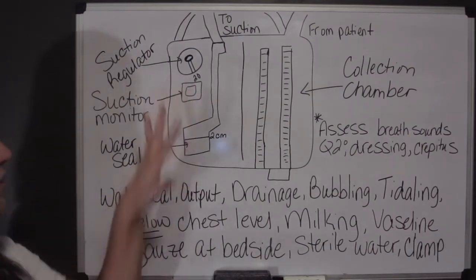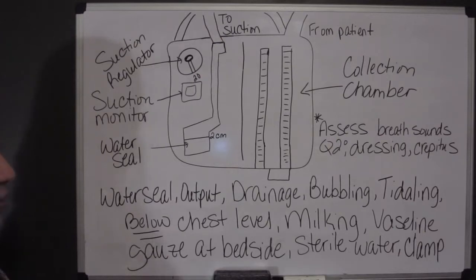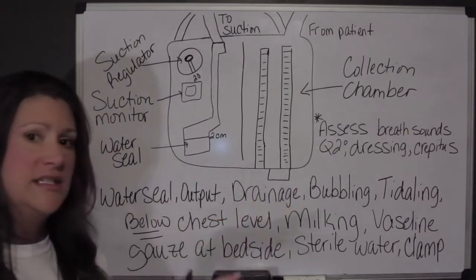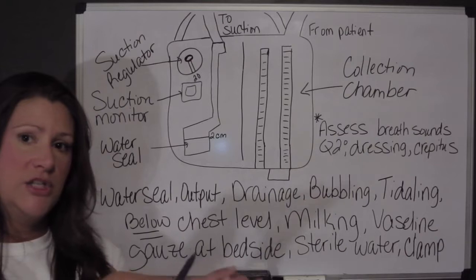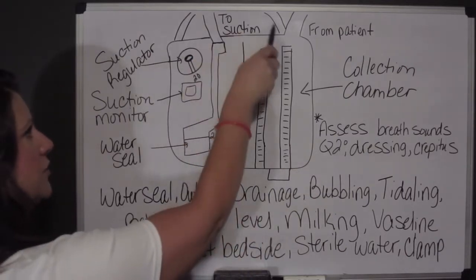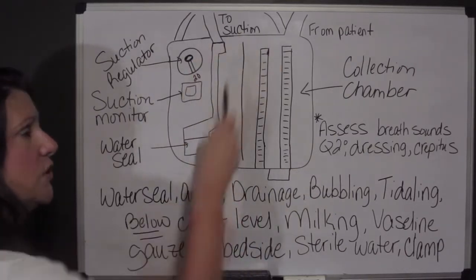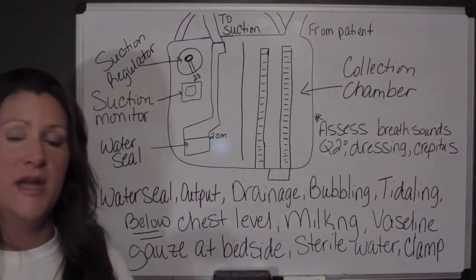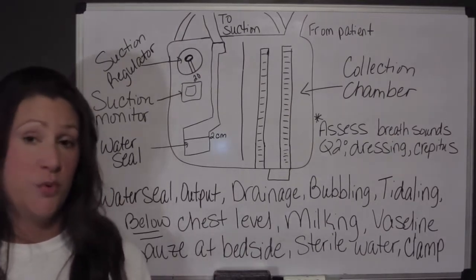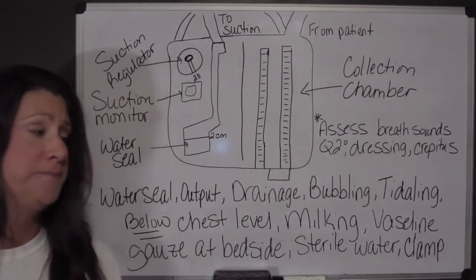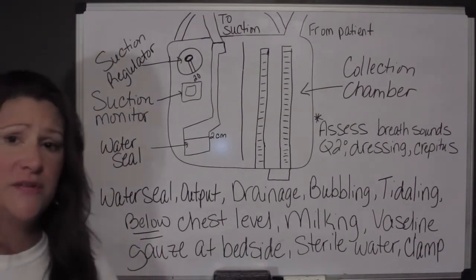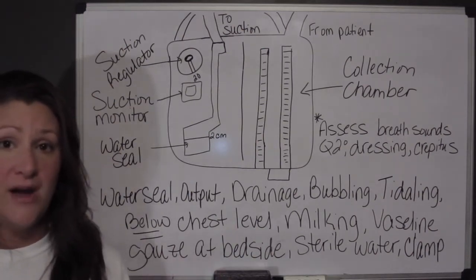Those are the parts. This right here is just the little tab that stabilizes the chest tube on the ground. There are also some handles on the top of the chest tube that will be used if the patient has to be transported anywhere. That sums up the main parts of the chest tube that you need to know.